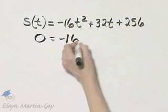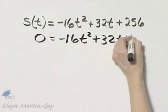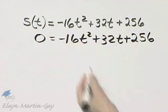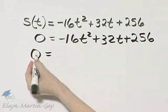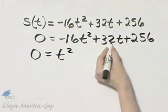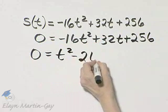So I'm solving 0 equals negative 16 T squared, plus 32 T, plus 256. Now there is a common factor of negative 16 throughout, so I'll divide every single term by negative 16. So that's 0 equal T squared, this divided by negative 16, that's minus 16.